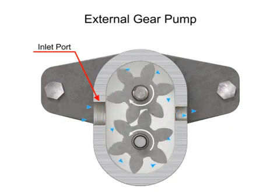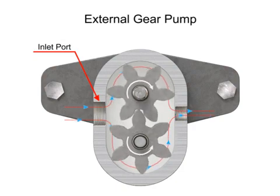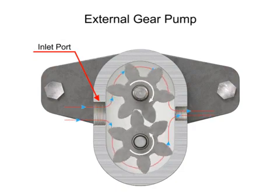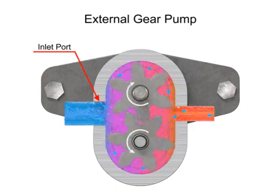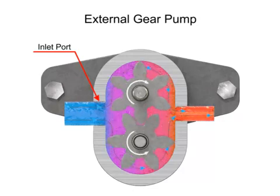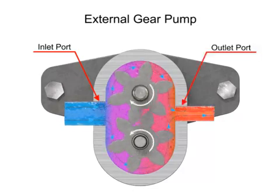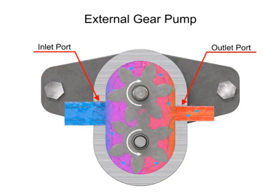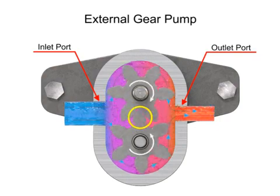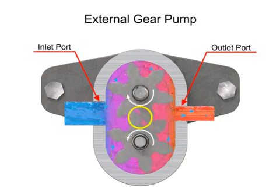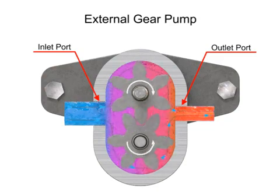Then fluid flows into the cavities and is trapped by the gear teeth. As the gears rotate, a flow path is created around the outside of each one. Fluid trapped in the slots between teeth is carried around and discharged into the cavity with the outlet port. Meshing of the teeth in the center of the pump seals the outlet port from the inlet port. No fluid passes between the gears.